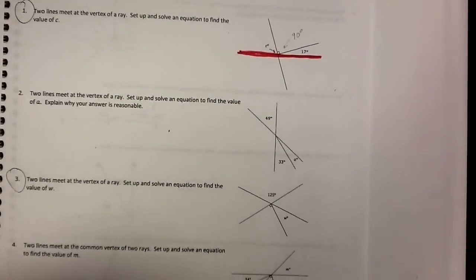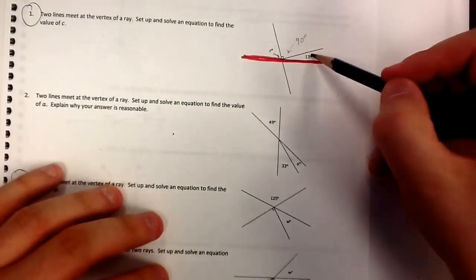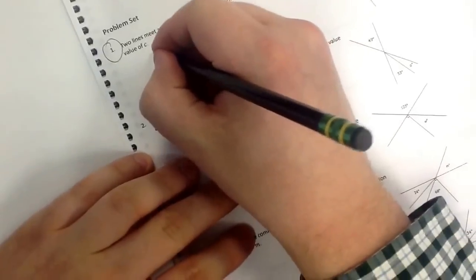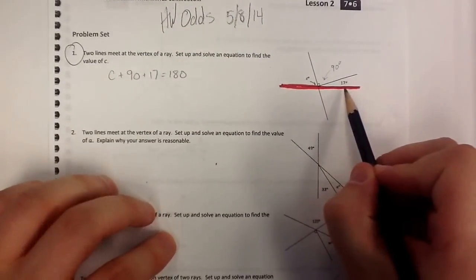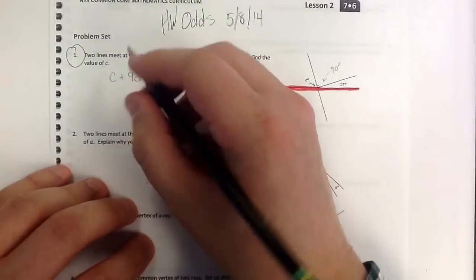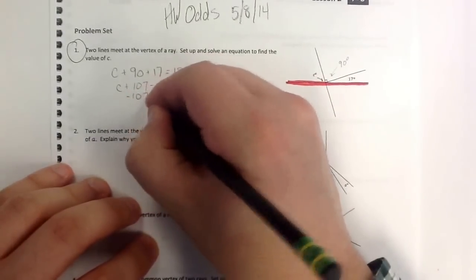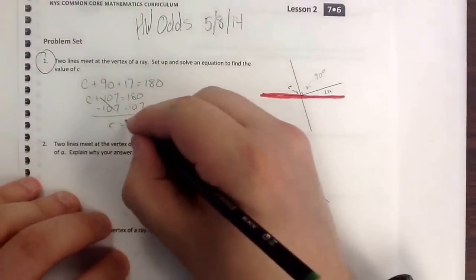And this angle is labeled 17 degrees. I look here — this is a straight line. There are three angles that make up this straight line: this angle, this angle, and this angle. We know what two of them are already, and the third one is our C. I know that angles on a straight line add up to 180. So if I take C plus 90 plus 17, I can set that equal to 180 because those three angles make a straight line — 180 degrees. Combine 90 and 17, I get 107. So C plus 107 equals 180.